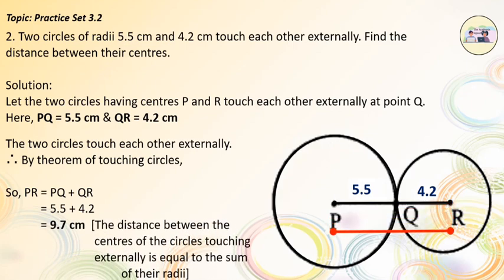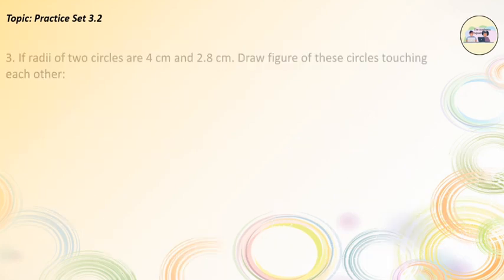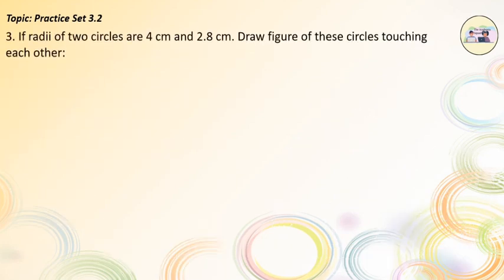The distance between the centers of the circles touching externally is equal to the sum of their radii. Question No. 3: If the radii of the two circles are 4 cm and 2.8 cm, draw a figure of these circles touching each other — first externally and second internally.